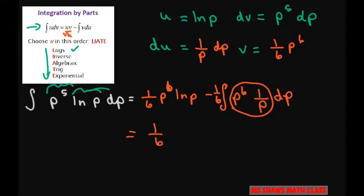That's going to be one sixth p to the sixth ln of p. And when you take the anti, this is, let's just write this as really p to the fifth. So when you do that, the anti-derivative of that is again the same thing, so that's just going to be minus one divided by 36 p to the sixth plus C.